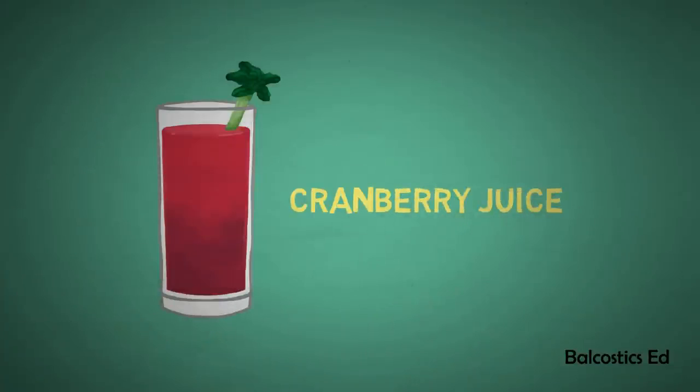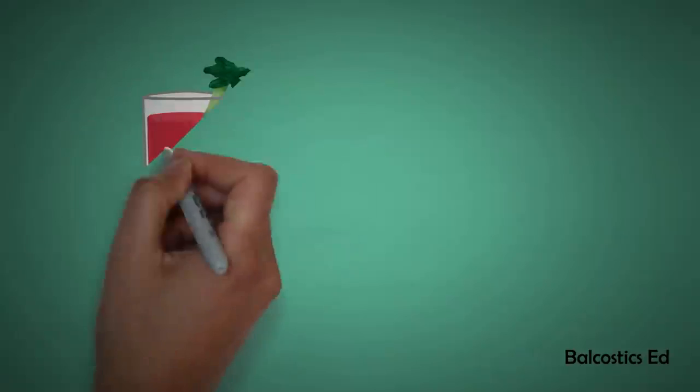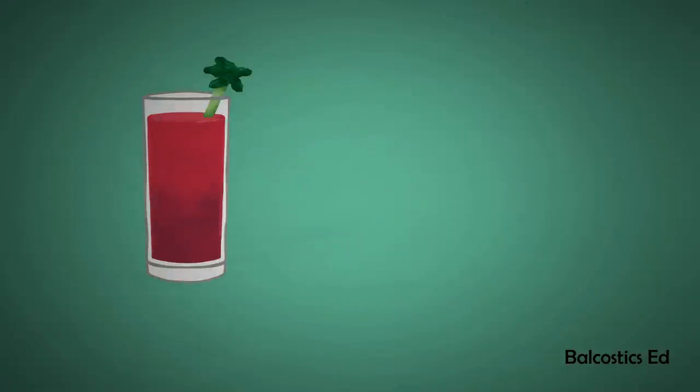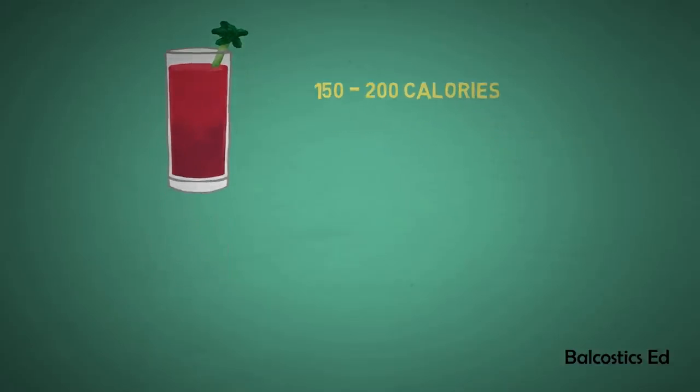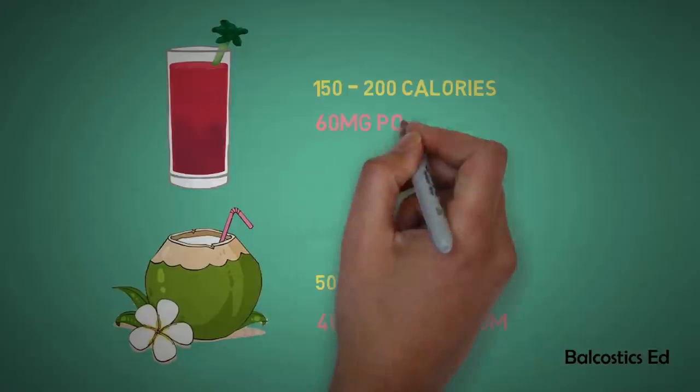Cranberry juice has become very popular because of its benefit to bladder health, but have you thought that similar benefits could be had from coconut water at less than half the calories and with appreciably more potassium? A glass of cranberry juice will provide about 150 to 200 calories, while the same glass of coconut water contains only 50 calories while giving 400 milligrams potassium compared to 60 milligrams for cranberry juice.